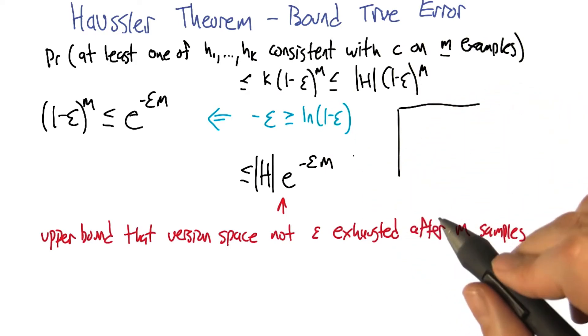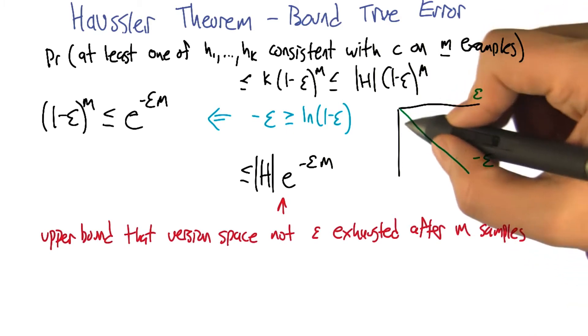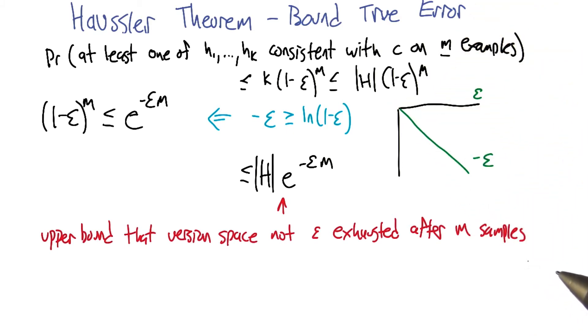Which maybe is not so obvious, but if you plot it, you can see that it's true. If this is the epsilon axis, then minus epsilon looks like a straight line going down like that. Sure, it's got slope minus 1.